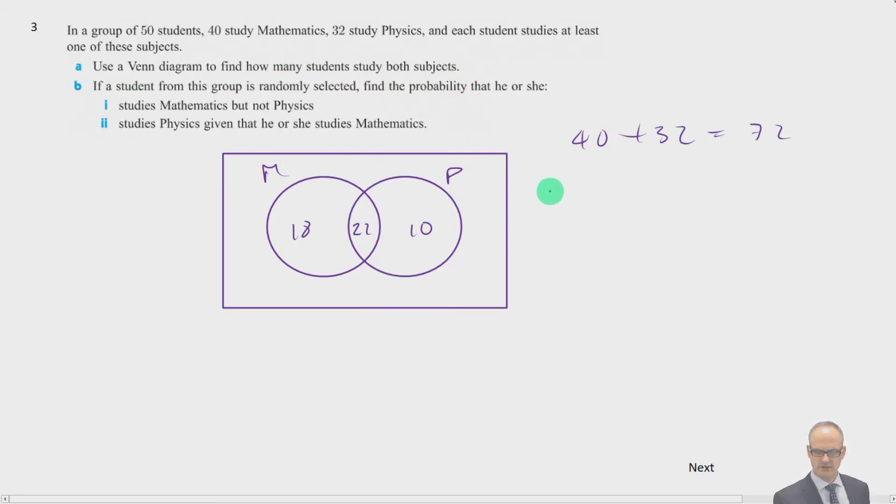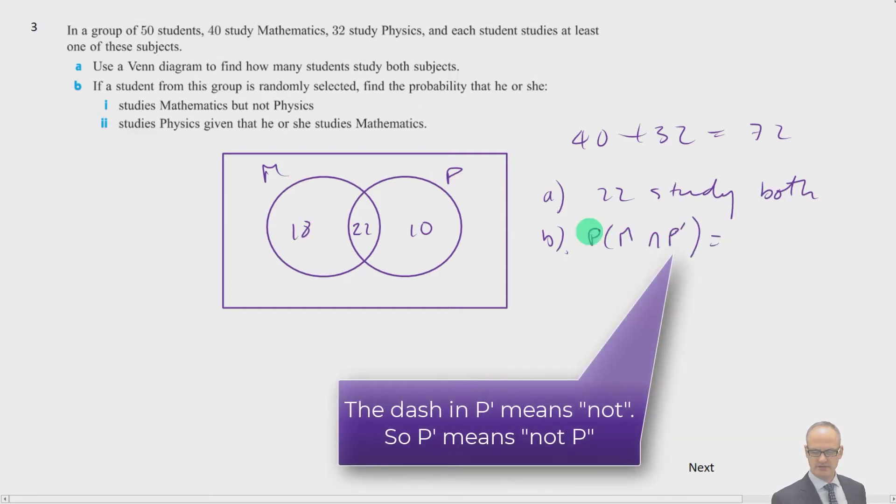So study both subjects. So part A, 22 study both. Part B. If a student from this group is randomly selected, find the probability they study maths but not physics. So studies maths but not physics is not conditional probability. We've got maths intersect not P. It's just going to be 18 out of 50. Part 2. Studies physics given that he or she studies maths.